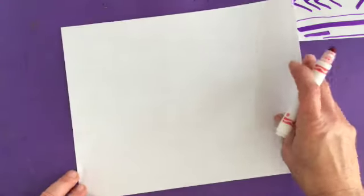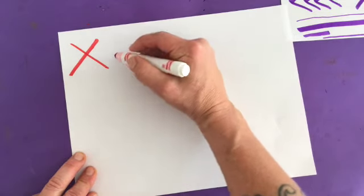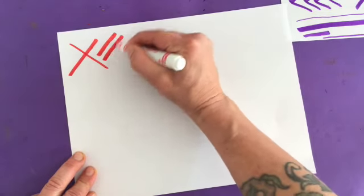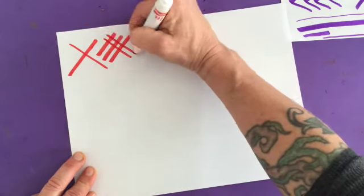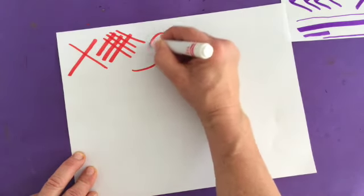You can have a crisscross line, it's also called a crosshatch line. You can have a loop-de-loo or a curly line.